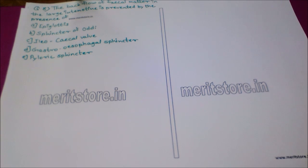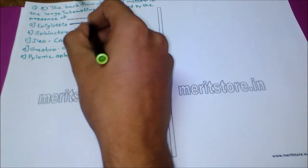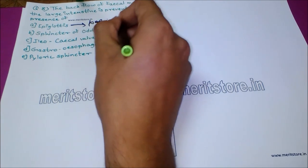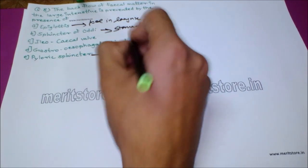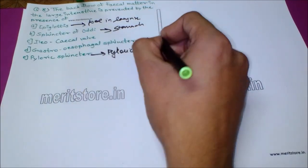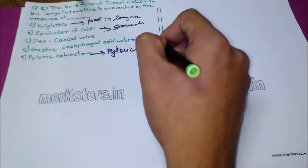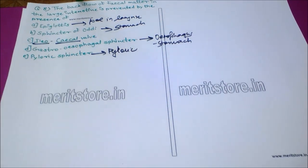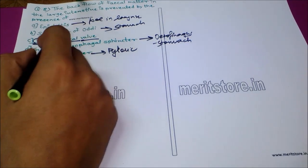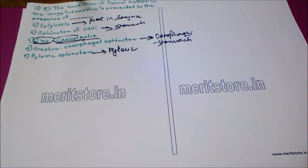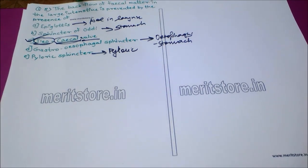The next question: the backflow of fecal matter in the large intestine is prevented by the presence of — option A: epiglottis, option B: sphincter of Oddi, option C: ileocecal valve, option D: gastroesophageal sphincter, option E: pyloric sphincter. The epiglottis is a cartilaginous flap near the larynx; sphincter of Oddi and pyloric sphincter are in the stomach; gastroesophageal sphincter is at the entrance of the esophagus. The ileocecal valve, named after the ileum (lower small intestine) and cecum (upper large intestine), prevents this backflow. The correct answer is option C, ileocecal valve.